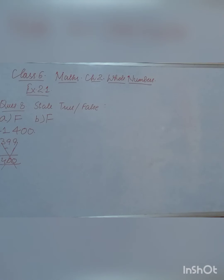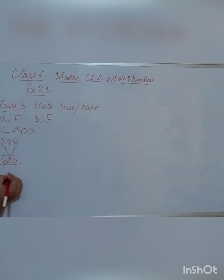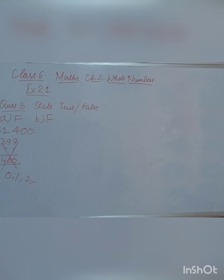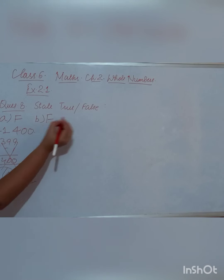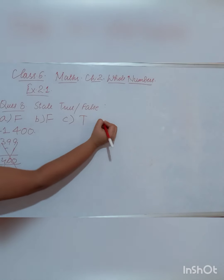The C part says: '0 is the smallest whole number.' That is correct — 0 is the smallest whole number because whole numbers start from 0, then 1, 2, and so on. Since 0 is the starting point, it is the smallest. This statement is true.